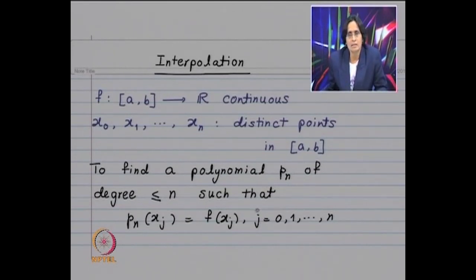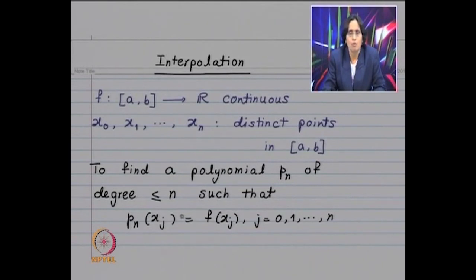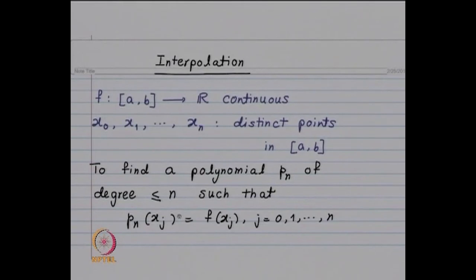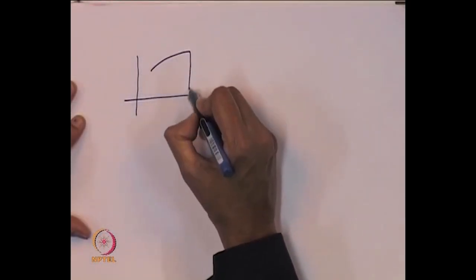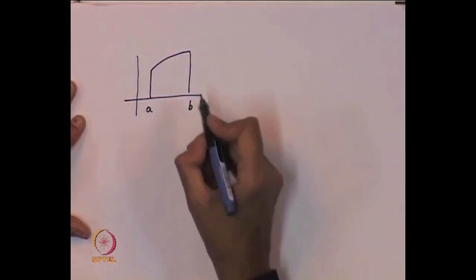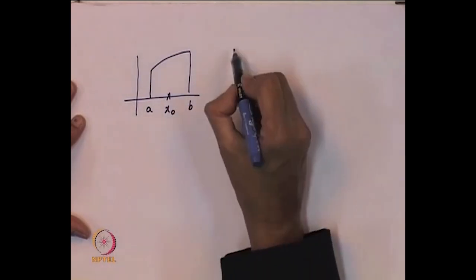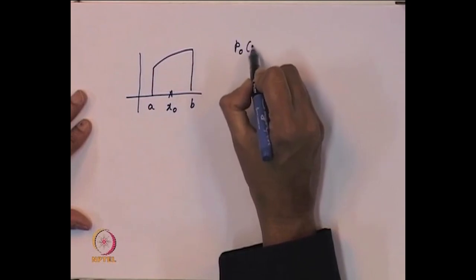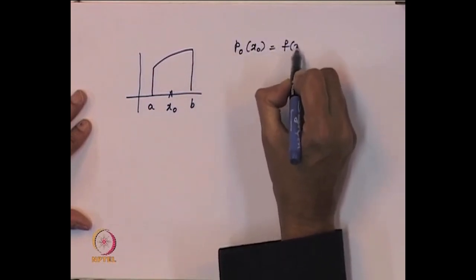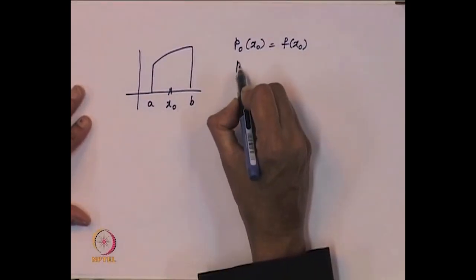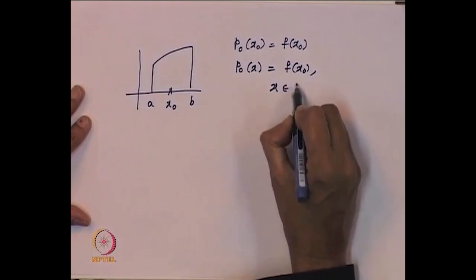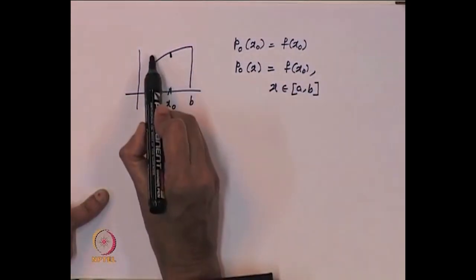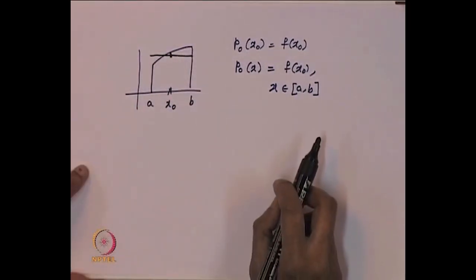First let us look at the case when n is equal to 0. That means we have got one point in the interval [a, b] and we want to find a constant polynomial. Suppose the function has a graph like this. This is interval [a, b] and this is point x_0. We want to find a constant function such that p_0 at x_0 is equal to f(x_0). It is immediate that such a polynomial is p_0(x) = f(x_0) for all x in [a, b] — we take the value there and consider the constant function.